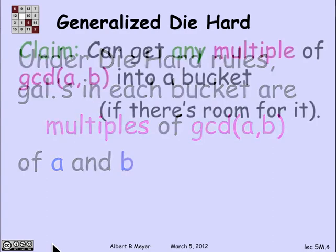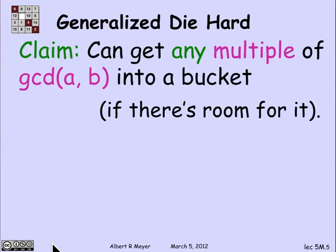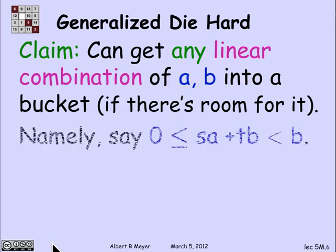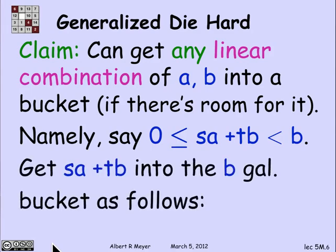But in fact, you can get any multiple of the GCD of A and B into a bucket, providing it'll fit in the bucket. That's the same as saying you can get any linear combination amount of A and B into a bucket if there's room for it. So suppose that I have a linear combination of A and B — S·A plus T·B — that will fit in bucket B, meaning it's greater than or equal to 0 and less than B. How do I get that amount into bucket B?